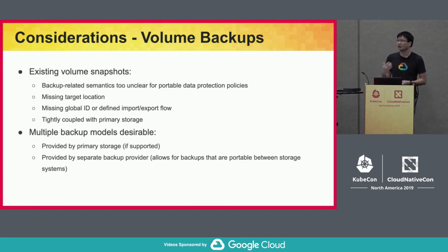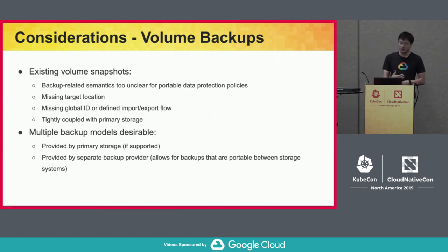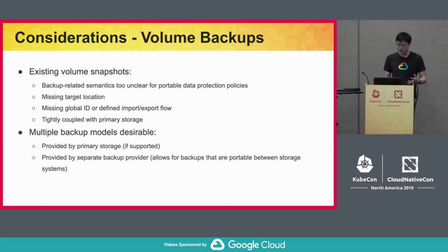The missing pieces include: the target location — where you want your backup to go — and a global ID that can uniquely identify volume backups even across clusters. It also lacks a defined import and export flow for volume backups, making it impossible to use a backup in a cluster different from where it was generated, and it's tightly coupled with primary storage. When implementing volume backups, there could be several backup models: providing backups through the primary storage system if it supports that, or allowing separate third-party backup providers or tools, enabling portable backups usable across different storage systems or cloud providers.